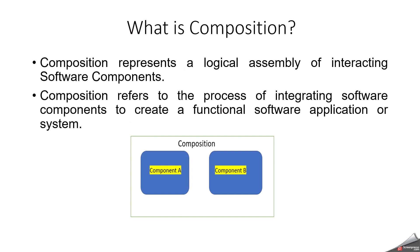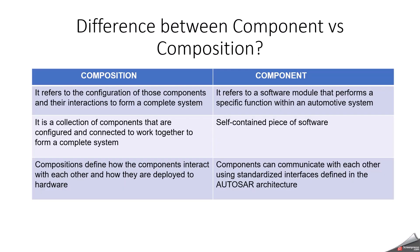The next question is: what is a composition? A composition is a combination — it contains more than one component. A composition represents a logical assembly of interacting software components. The difference between a component and a composition is that a composition can have multiple components, while a component refers to a self-contained piece of software. A composition defines how the components interact with each other and how they are deployed to hardware, communicating via standardized interfaces defined in the AUTOSAR architecture.